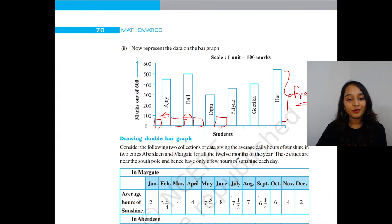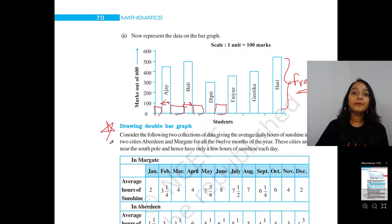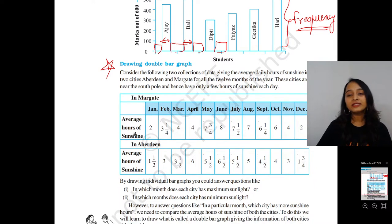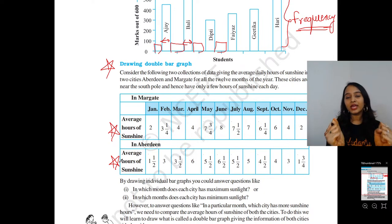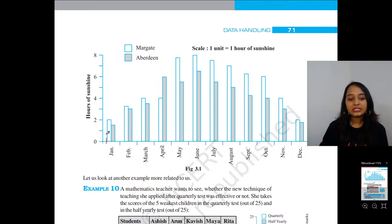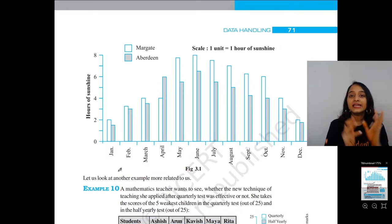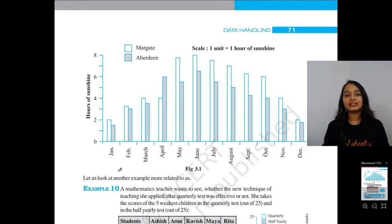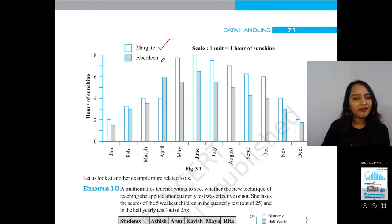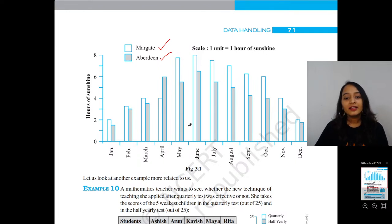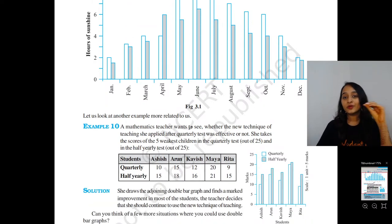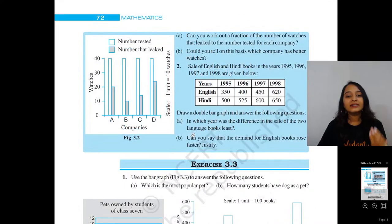Then we have our double bar graph - it's the bigger brother of the bar graph. We use a double bar graph when we have two sets of data to compare. Instead of writing two different bar graphs we combine them together into one graph - you can see two bars side by side. It's mainly used when you have to compare two sets of data. For example, comparing number of sunshine hours in two places - you put both into the same graph. When you have two attributes to compare, we use our double bar graph.